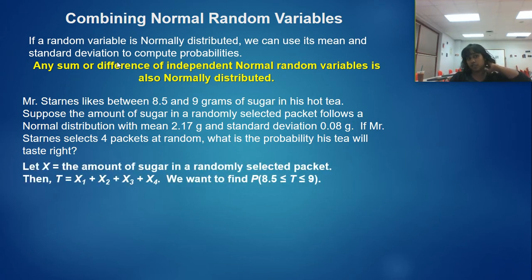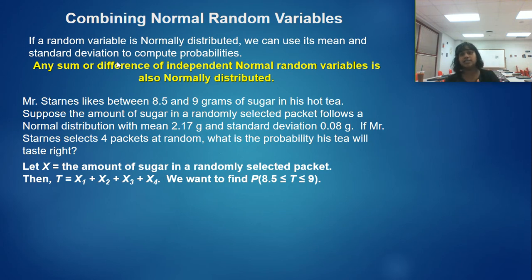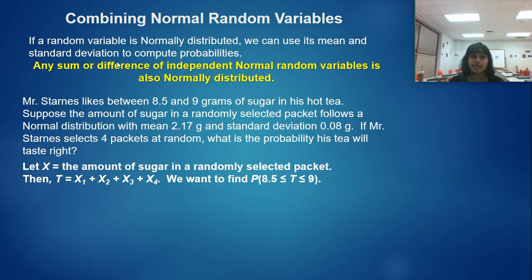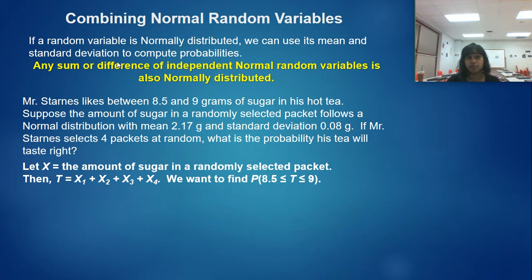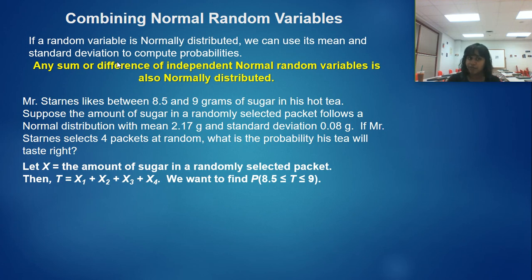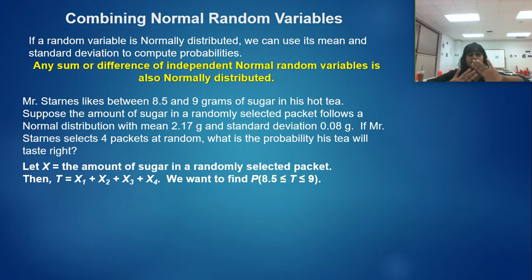We define X as the amount of sugar in a randomly selected packet, so we have X sub 1, X sub 2, X sub 3, and X sub 4, each representing a randomly selected packet. T equals X sub 1 plus X sub 2 plus X sub 3 plus X sub 4 — that comes from interpreting the paragraph. We want to find the probability that T is between 8.5 and 9 grams.